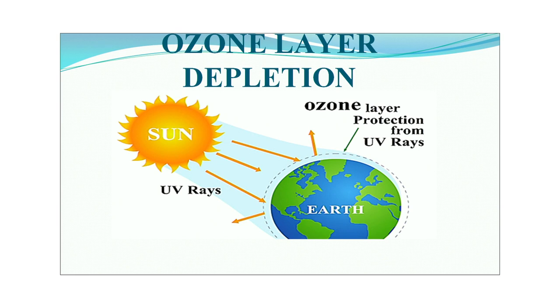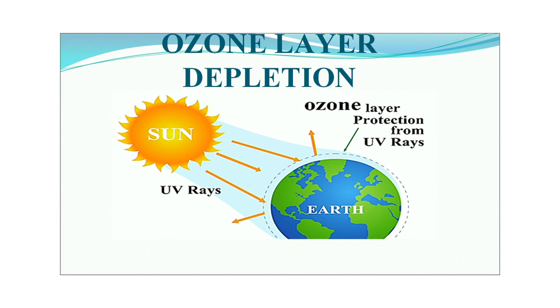Our next topic is ozone layer depletion. Solar radiation including UV light strikes our Earth's surface. UV radiation is protected by the ozone layer, which is a natural shield found as a very thin layer in the lower stratosphere, from about 20 to 30 kilometers from Earth's surface. Ninety percent of atmospheric ozone is present in this layer. Ozone is both naturally formed and destroyed in our atmosphere.